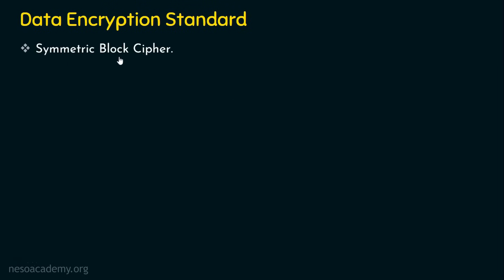DES is actually a symmetric block cipher. Symmetric cipher means the same key is used for both encryption and decryption. A block cipher is not going to take input bit by bit or byte by byte; rather, it is going to take a group of bits as input.